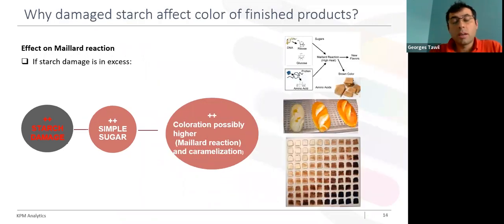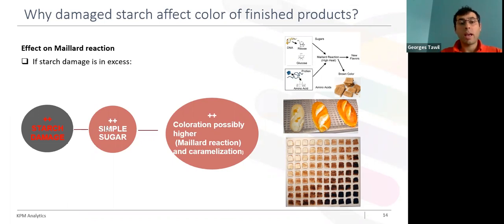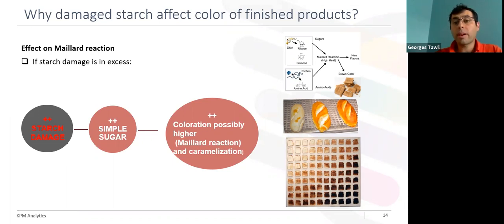Let's see why damaged starch can also affect the color of the finished product. Again, if we start with excess starch damage, during fermentation we will have more simple sugars available. Then during the baking step, it is more likely to form a more reddish, darker color due to the Maillard and caramelization reactions, as briefly explained in this schematic and as we can see in the consequences shown in these pictures.